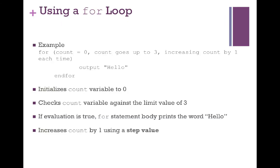Here's a simple example. We have a count variable that is declared and initialized to zero. We're saying while count is less than three, each time through the loop we're going to increase count by one and output hello. Once the condition becomes false, we exit out of the for loop.